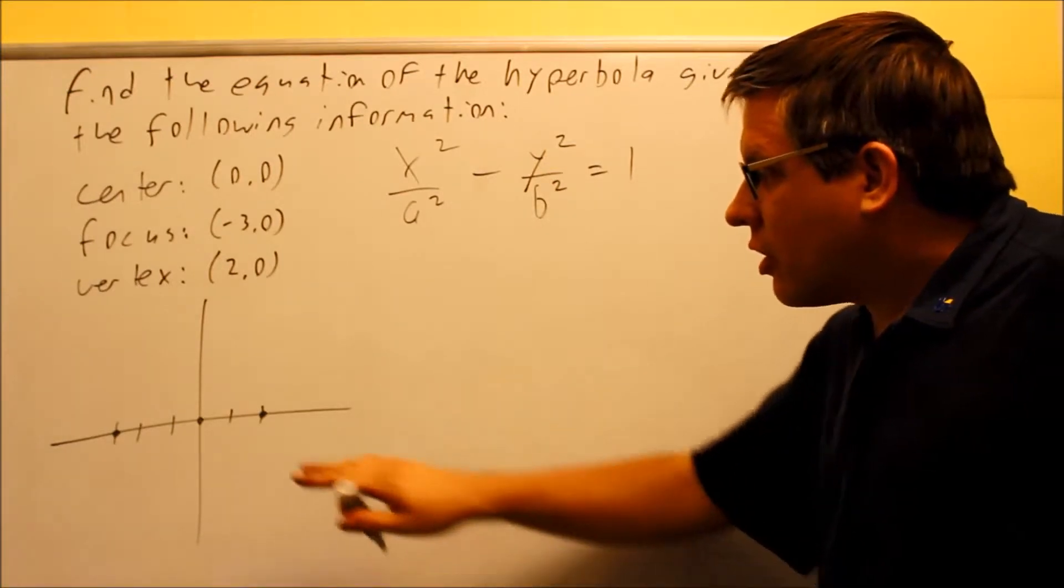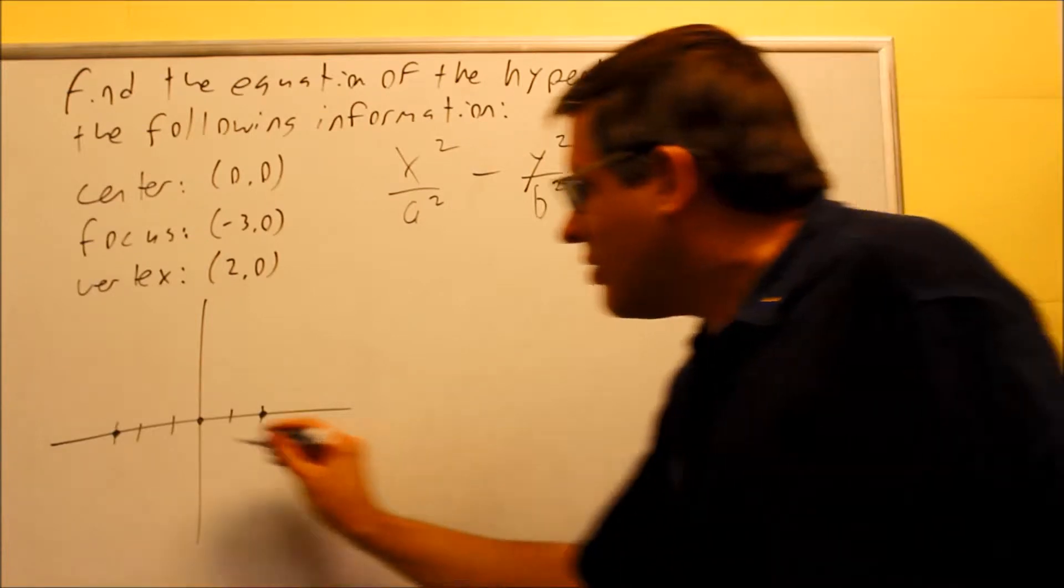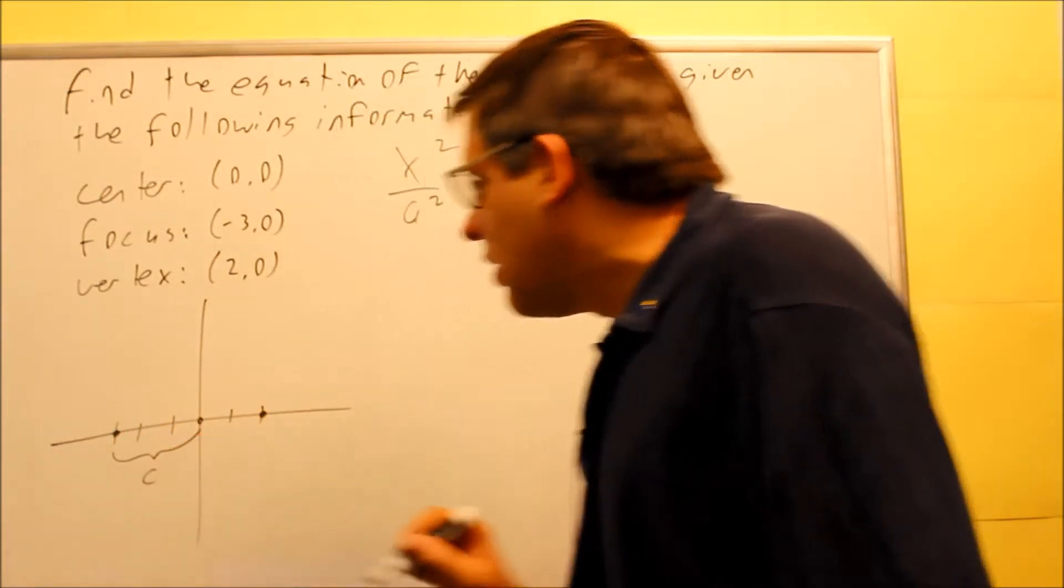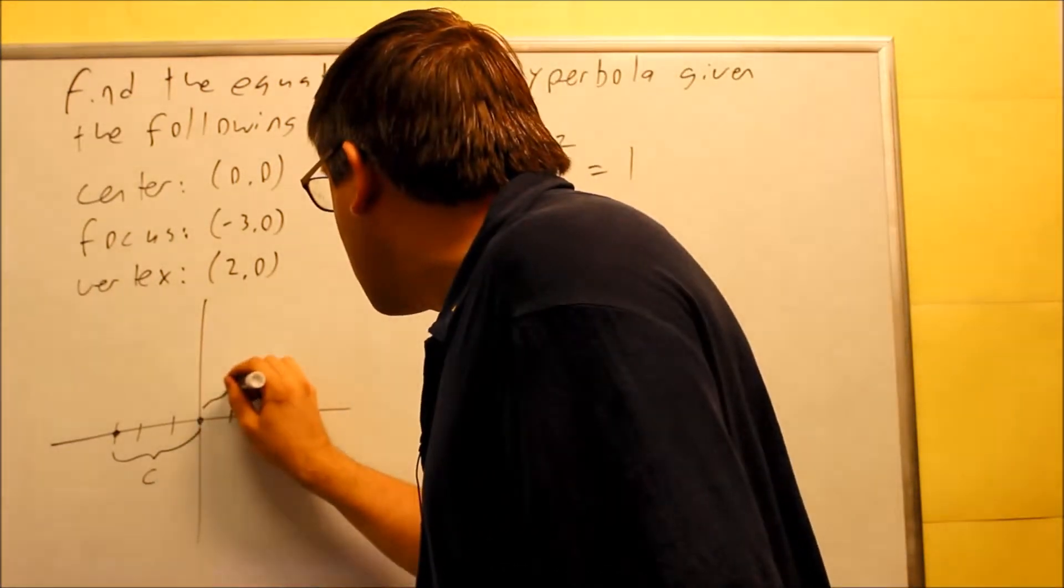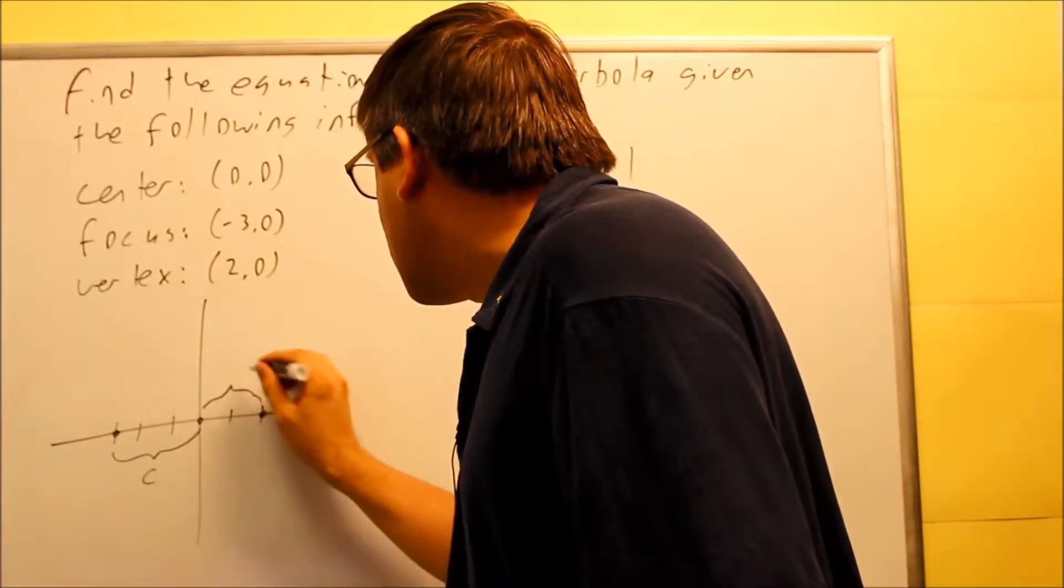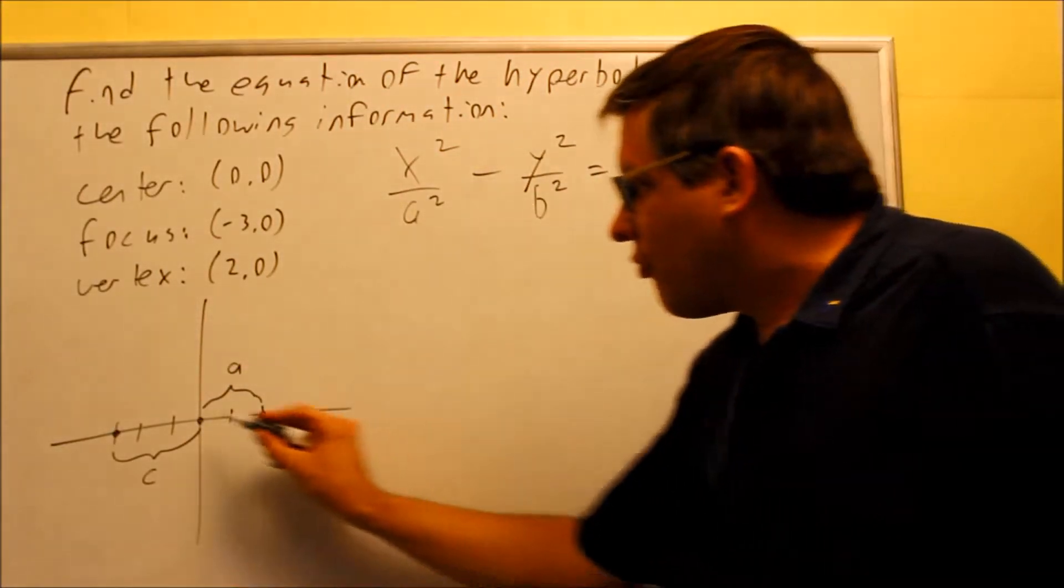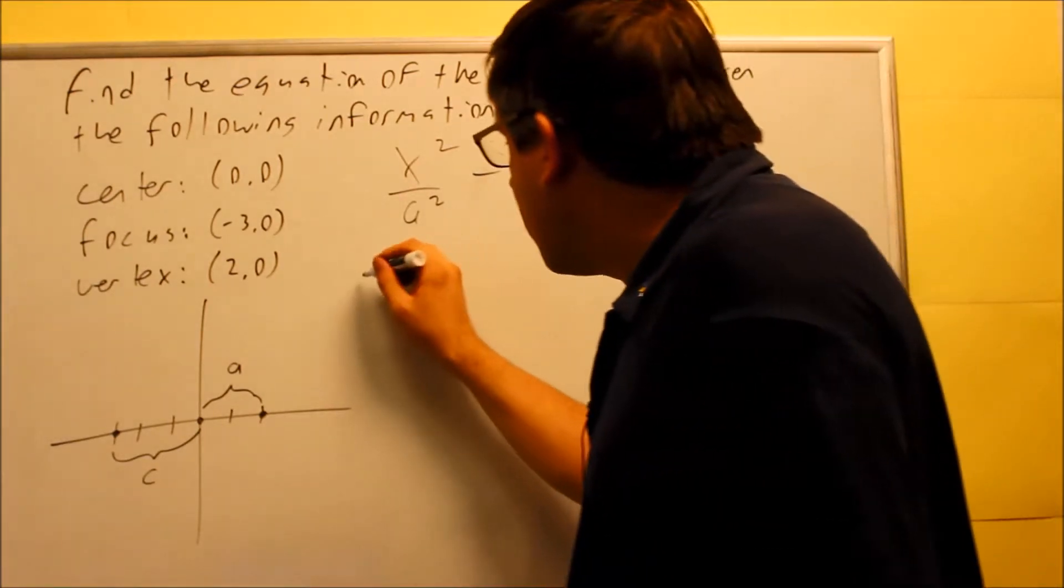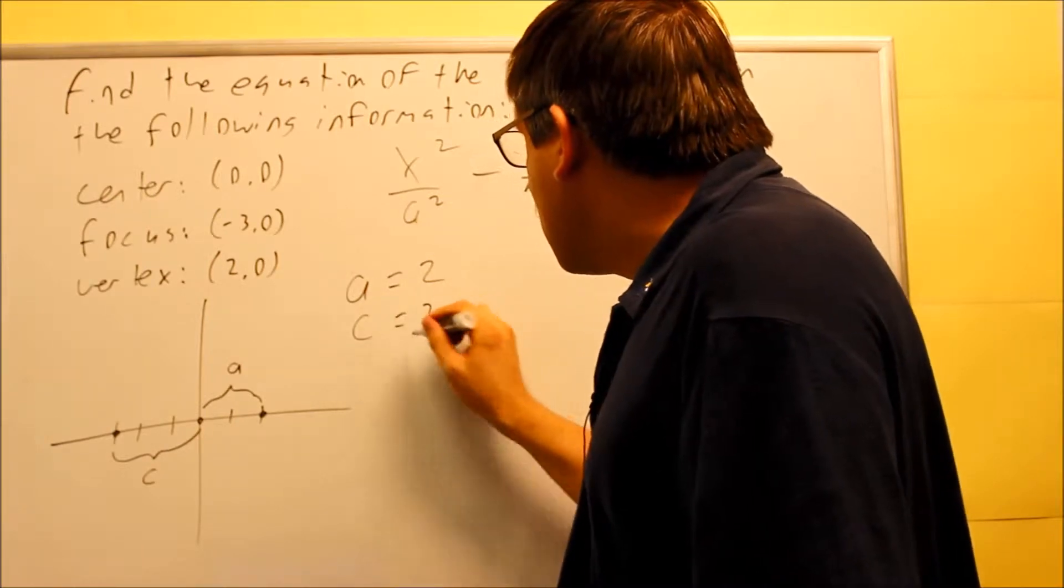Now, let's look at the picture and analyze and see what information we are actually given. The distance from the focus to the center, that's always going to be your C value. The distance from your center to the vertices, that's always going to be A. So from that information that's given, we can automatically tell what the A and C values are. A is going to be 2 and your C is going to be 3.